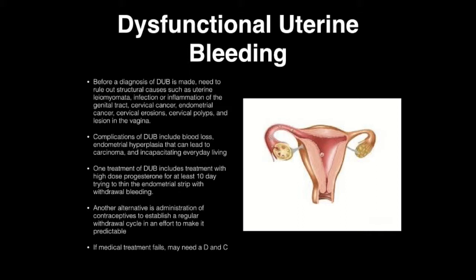One treatment of dysfunctional uterine bleeding includes high-dose progesterone for at least 10 days, trying to thin the endometrial stripe from withdrawal bleeding. Another strategy is implementing oral contraceptives to establish a regular withdrawal cycle to make it predictable. If treatment fails, the patient may need a D&C.